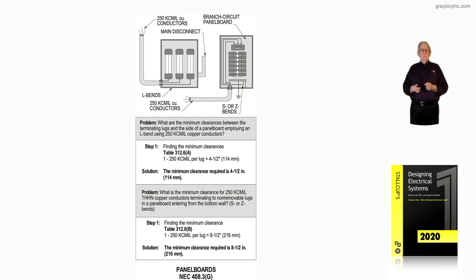Notice the first question in the problem is, what are the minimum clearances between the terminating lugs and the side of a panel board supplying an L-bend using 250 KC mill copper conductors?